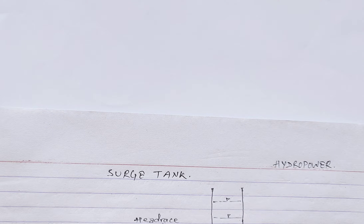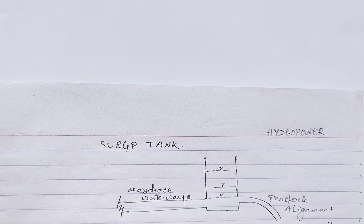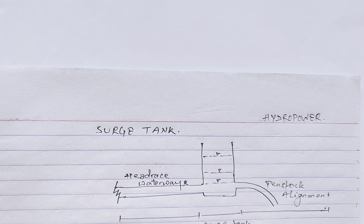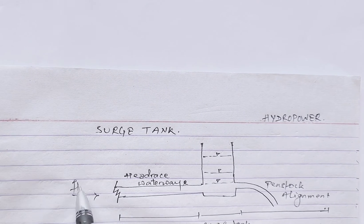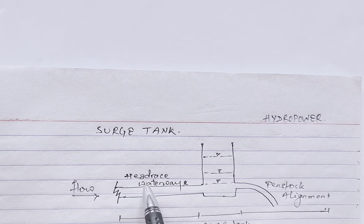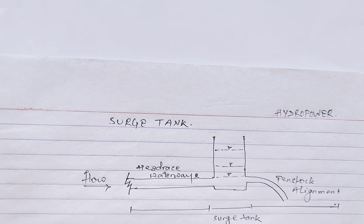Here we have presented a typical layout picture of a source tank. From here the water is coming — that's the flow direction — from the headrace alignment, either the headrace pipe or the tunnel. This one is the source tank, and after the source tank the penstock occurs.